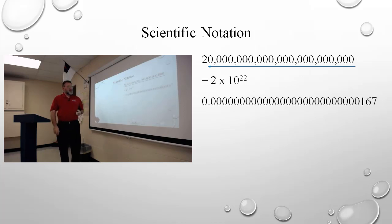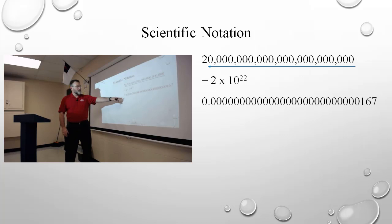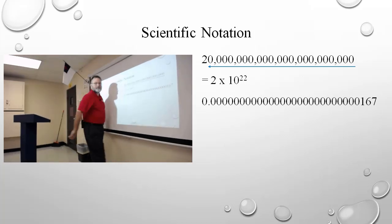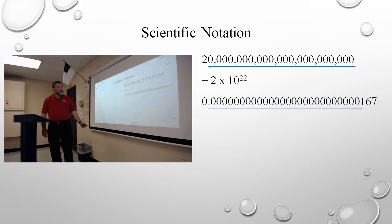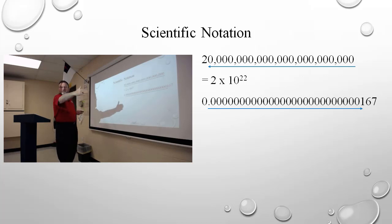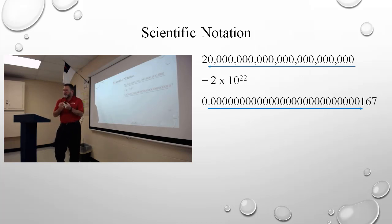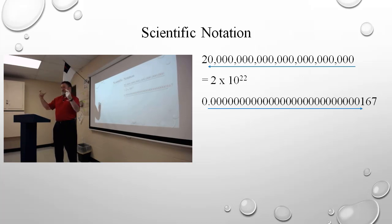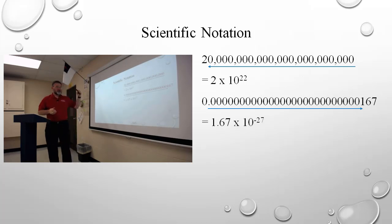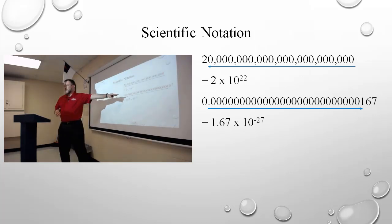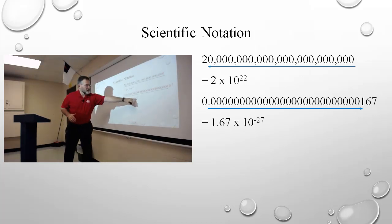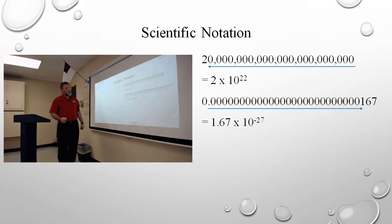The other side of that is also true. We have a very small number — the decimal point is here, so this is very, very small. I move the decimal to the right, and since I'm moving it to the right, I count how many places I move it. Since I'm taking a very small number and making it appear very much larger, I have to put a negative exponent. Because negatives are past zero, they get smaller. If I move it 27 places to the right, my exponent has to be a negative number. In this case, 27 places to the right, the number is 1.67.